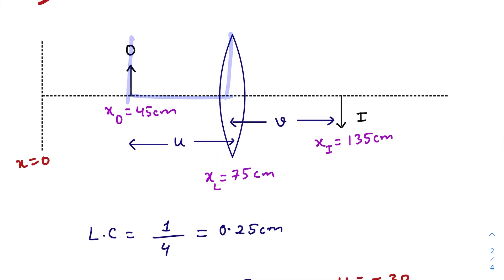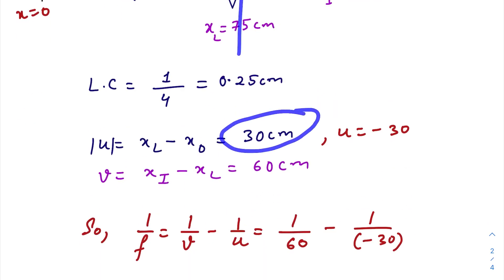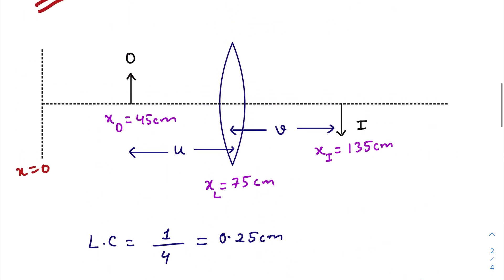So the object distance, that is the distance of the object from the lens, is x_l minus x_o, 30 centimeter. But while putting inside the formula we will use minus 30 centimeter. So v is x_i minus x_l, so that is 135 minus 75, that gives us 60 centimeter.